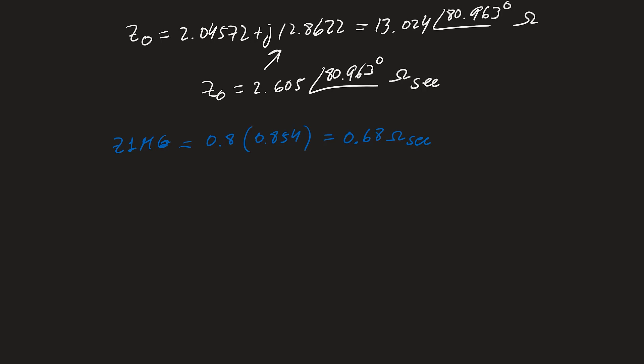For zone two, Z2MG = 1.2 × 0.854 = 1.02 ohms secondary. Now lastly, let's calculate the zero sequence compensation factor K0, which is what the relay uses to compensate for the mho ground distance element being set in positive sequence terms while operating for ground faults.